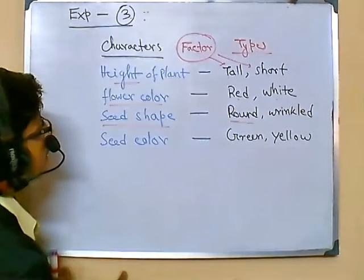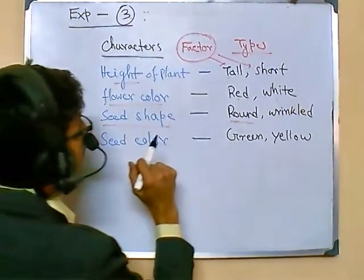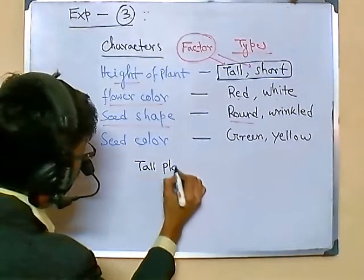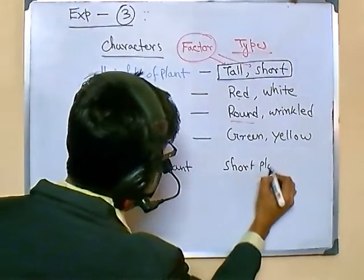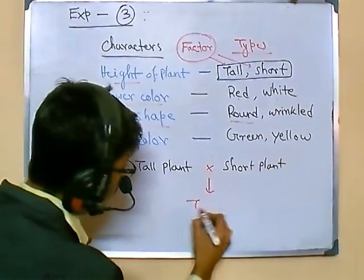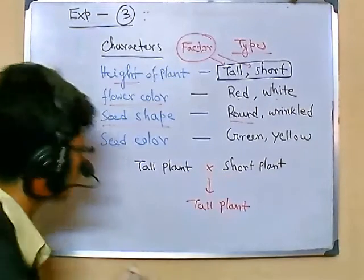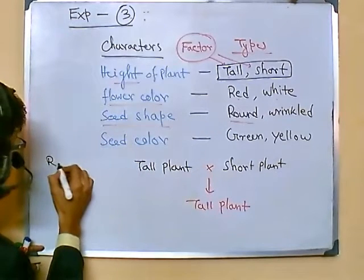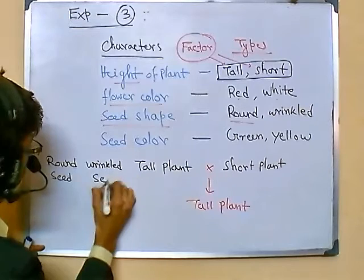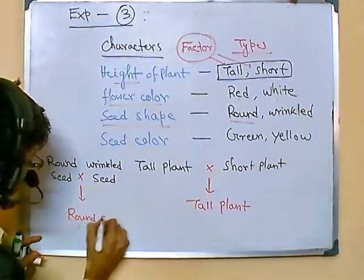In Experiment 3, he took one particular character — the height of the plant. He took a tall plant and a short plant, crossed them, and in the next generation he found tall plants. On the other hand, he conducted the experiment again with another character — seed shape, that is round seed and wrinkled seed — crossed between the two, and what he found again in the next generation was round seeds.